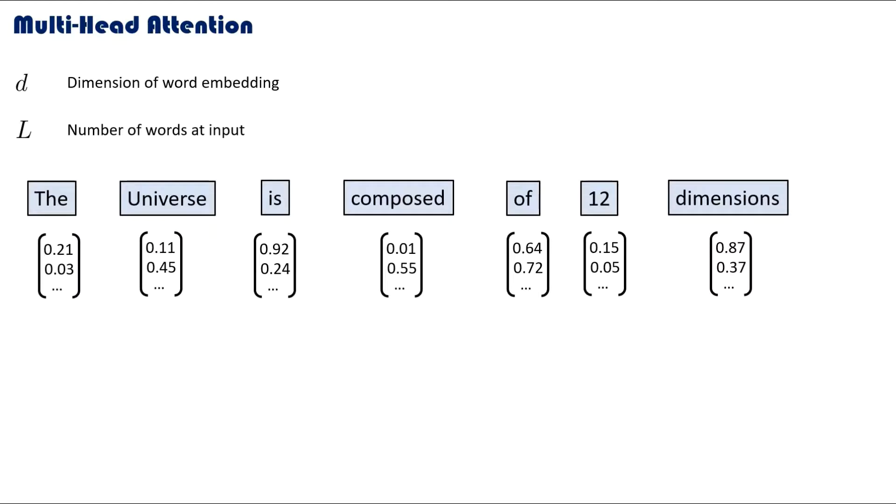Let us denote the dimension of a word embedding as d and the number of words at the input as L. For example, in this input we can see that there are L words where L is set to the value of seven. Then we can think of our value, key, and query as tensors where each word embedding is a row vector. Hence each of these matrices will have L rows and d columns.